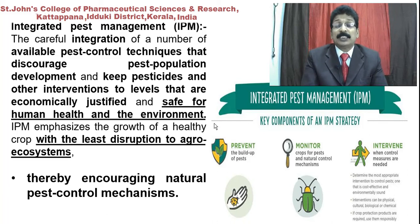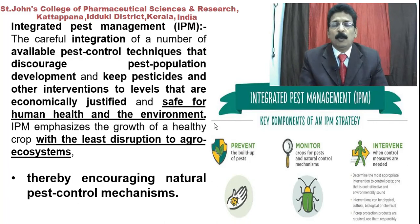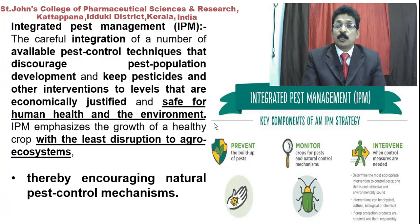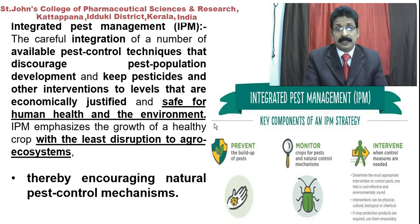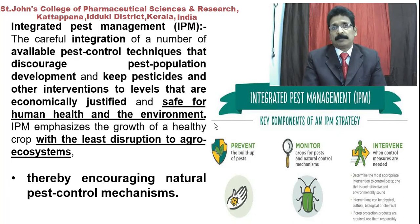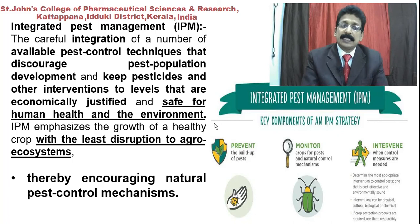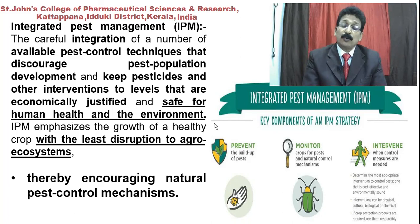IPM emphasizes crop health with the least disruption to the agro-ecosystem, thereby encouraging natural pest control mechanisms. The key concepts of IPM are: first, prevent the build-up of pest populations; second, encourage natural control mechanisms; third, intervene with control measures only when they are needed. That is the IPM strategy.